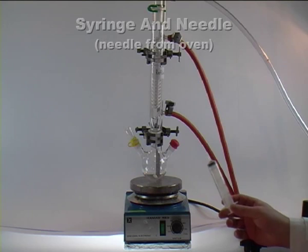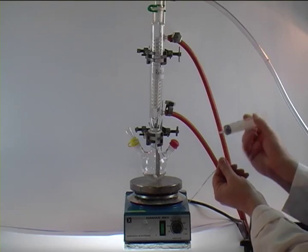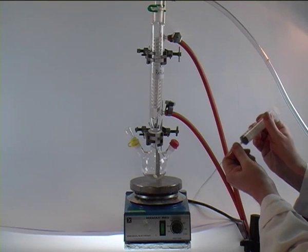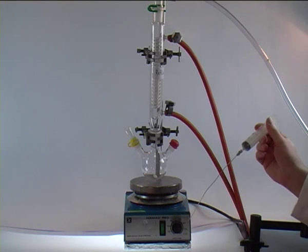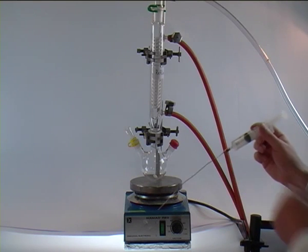Here we have our syringe and the needle, which we took out of the oven so that it is dry. In order to connect it to the syringe, we just put them together, tighten them and from the reservoir, suck in our liquid.